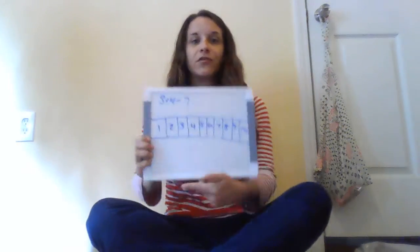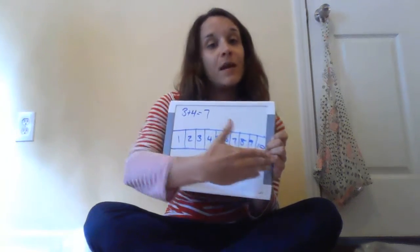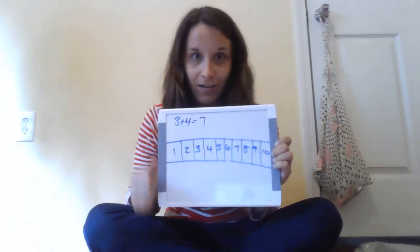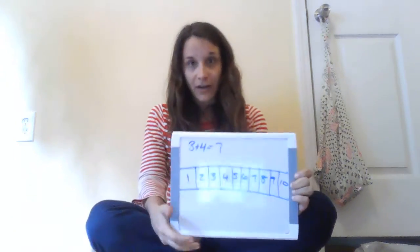So when we used drawing, we got an answer of 7. When I use the number line, I also got an answer of 7. And the last strategy that you're going to get to use are your fingers. Sometimes you might not have a number line or you might not be able to draw, so we can use our fingers to help us solve also. My problem was 3 plus 4.